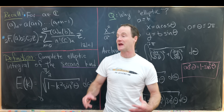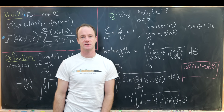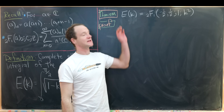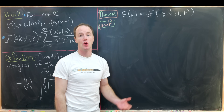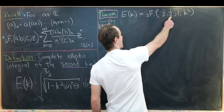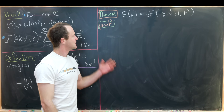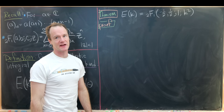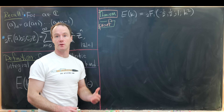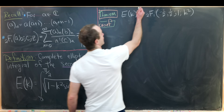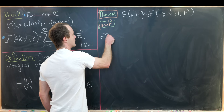Now I want to prove a nice result that links this type of elliptic integral to hypergeometric functions. We'll prove that the complete elliptic integral of the second kind E(k) equals (π/2) times F(2,1)(-1/2, 1/2; 1; k²). We'll do this just like in the previous video with a straightforward calculation, using a couple of standard facts along the way. Oh, and I almost forgot — I'm missing a π/2.